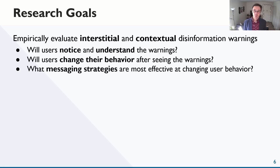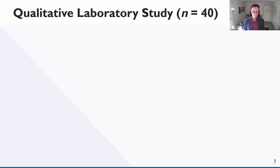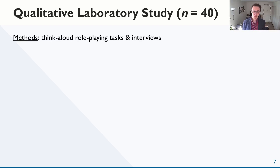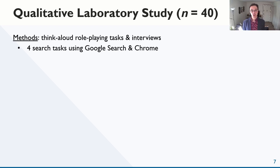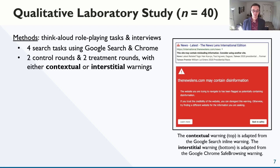We developed two studies to answer these questions: first, a small-scale qualitative study, then a larger-scale quantitative study. For the qualitative study, we recruited 40 student participants. They each searched for four facts using Google search in a Chrome browser, and in two rounds they saw warnings — either a contextual or an interstitial. We adapted those warning designs from Google's warnings, which are generally representative of current search and browser warning designs. We chose to study search rather than social media because we could create a plausible scenario to directly observe user decisions.